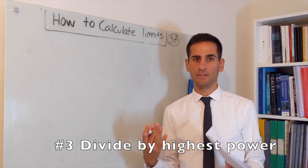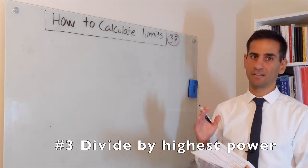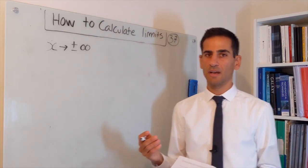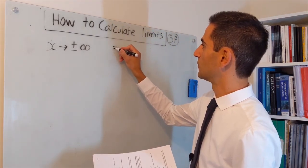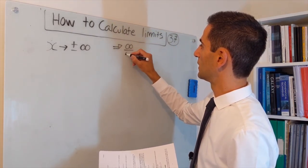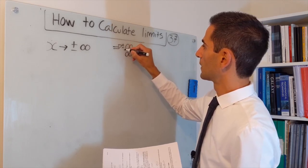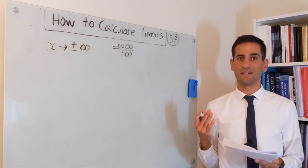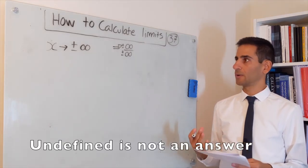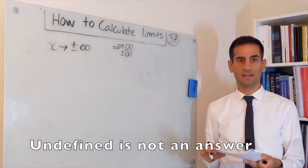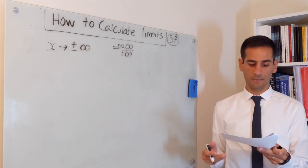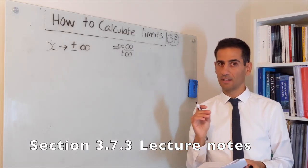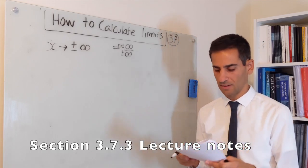Sometimes we actually want to calculate a limit when x is going to plus or minus infinity. The problem is many times this leads to an indetermination — it could be plus or minus infinity over infinity, which is undefined. So we need to find a way to find these limits. Example 3.7.3 shows how dividing by the highest power actually works, so let's have a look at this example.